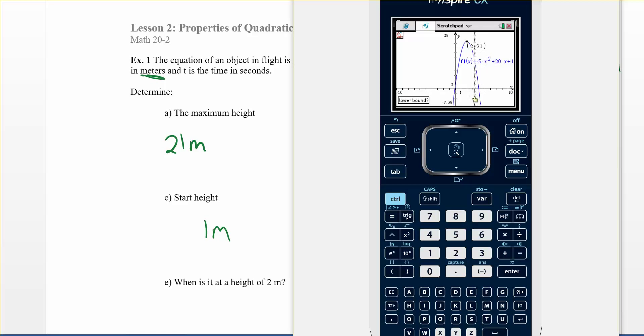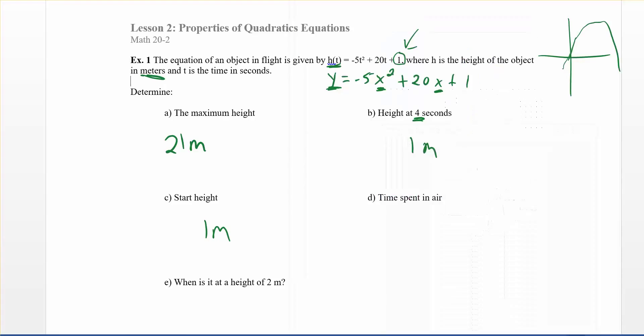And again, all you're going to do is go to the left of where you want. Go to the right. And it's even asking me, oh, the zero, is that what you're looking for? So I push enter. And it's 4.050. So pretty much four seconds. And if you didn't actually do these steps that I did, you'd probably look at it and be like, oh, it crosses at four. But it's not quite four. Or it's just past four, I guess. It's 4.05. So time spent in there would be 4.05 seconds.